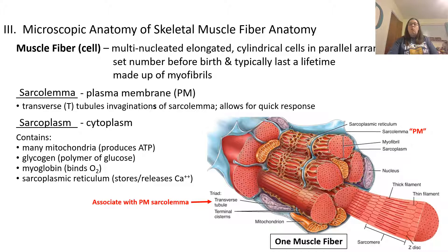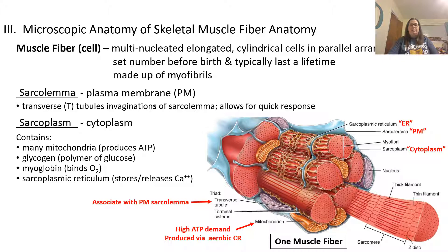The muscle fiber also has sarcoplasmic reticulum, which is a specialized type of smooth ER. It stores and releases calcium ions, which are important for sarcomere contractions. The sarcoplasm is the cytoplasm with lots of mitochondria due to the high demand for ATP through cellular respiration. The sarcoplasmic reticulum is a modified smooth ER containing calcium ions. When you see 'sarco' as part of a name, it pertains to a muscle cell. The terminal cisterns are part of the sarcoplasmic reticulum and run next to the transverse tubules, which are part of the sarcolemma.